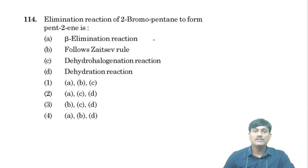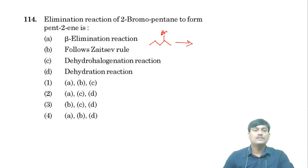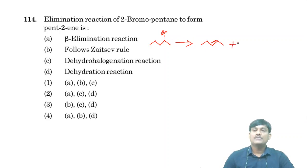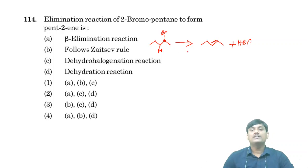Let us take 2-bromopentane: CH₃, CH₂, CH₂, CHBr, and CH₃ — carbons 1, 2, 3, 4, 5. This 2-bromopentane is converted into pent-2-ene, a 5-carbon chain with a double bond at the second position.